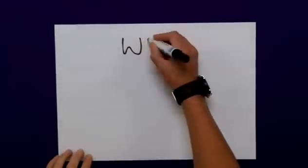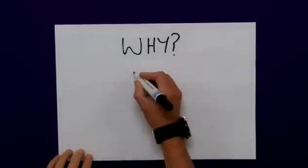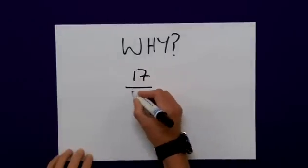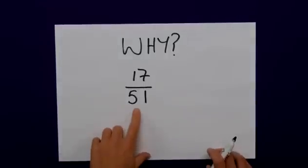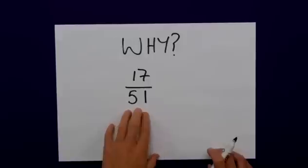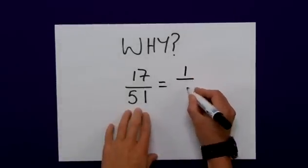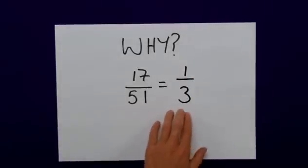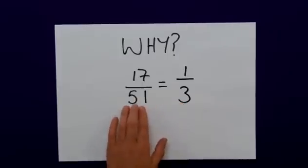So why do we do this in the first place? Well, if I use an example of 17 over 51, that's a horrible looking fraction and I really can't picture that in my mind at all. However, believe it or not, that is the equivalent fraction of one third, which is a lot easier for me to understand and actually use in my mathematics. I can picture that in my mind much easier than I can 17 over 51.